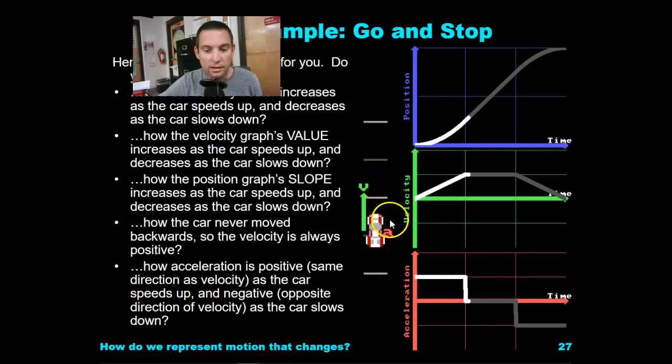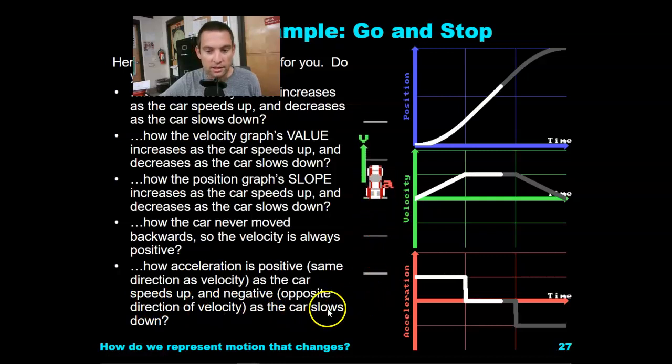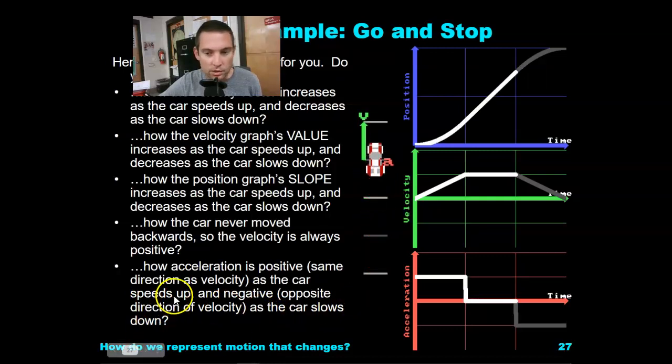Acceleration forward, then zero acceleration, and then acceleration backwards — opposite direction. When velocity and acceleration are in opposite directions, the object is slowing down.